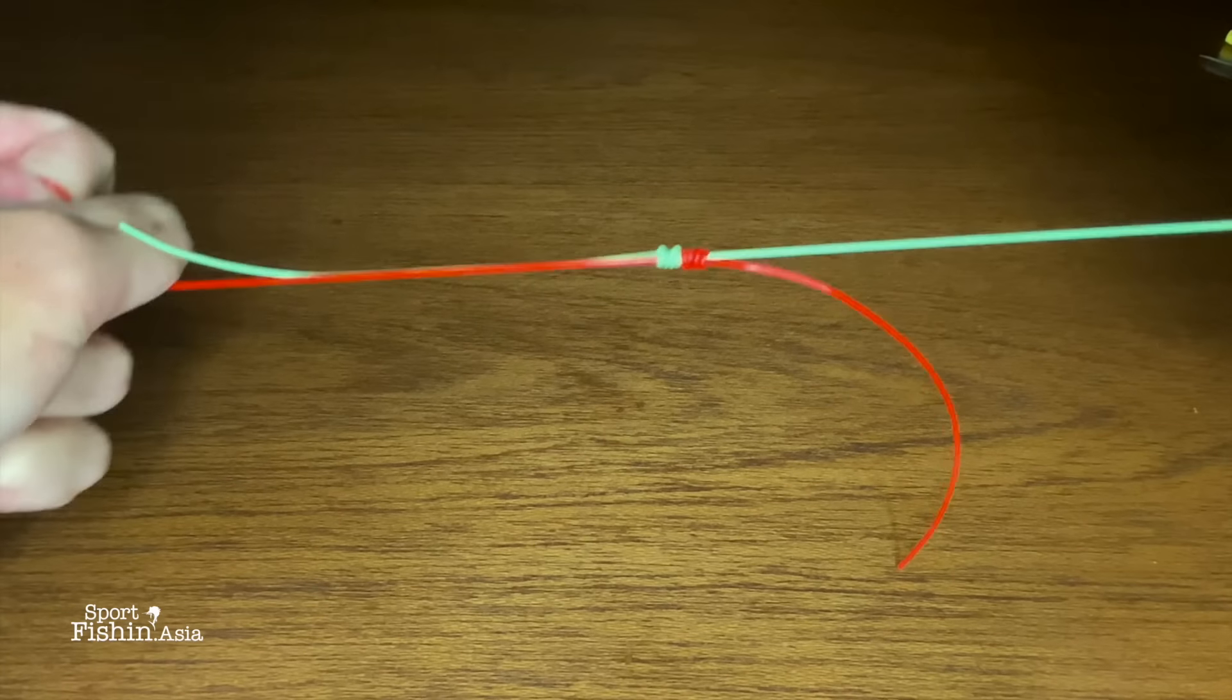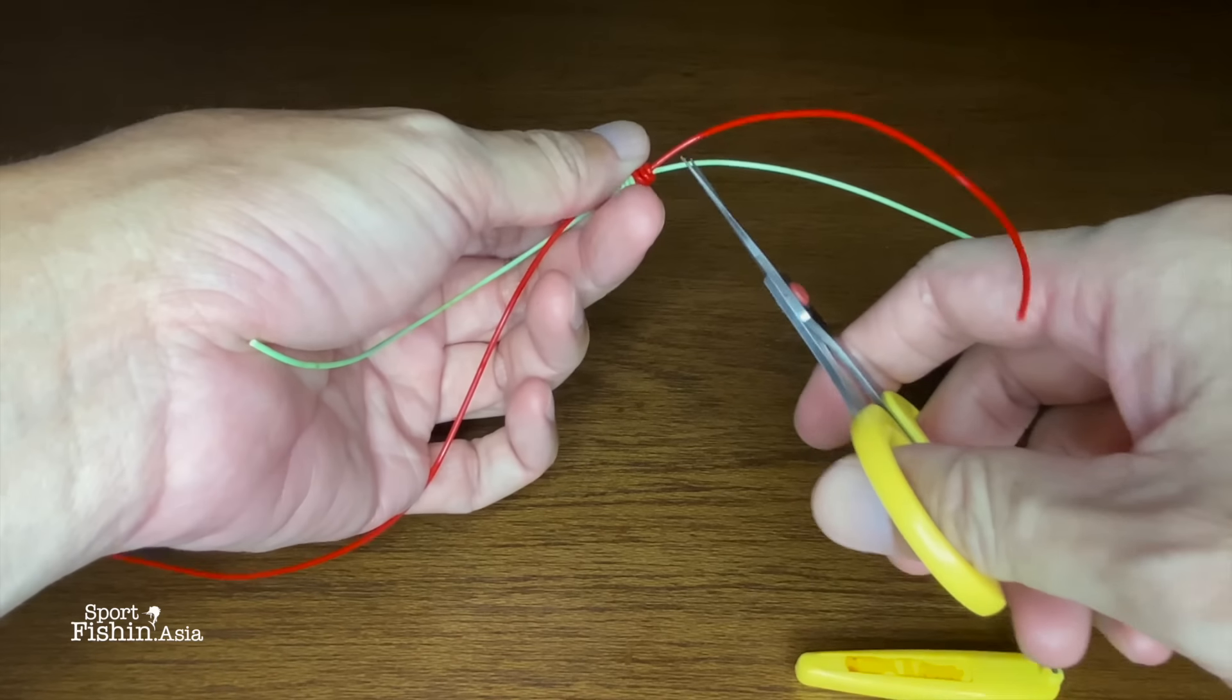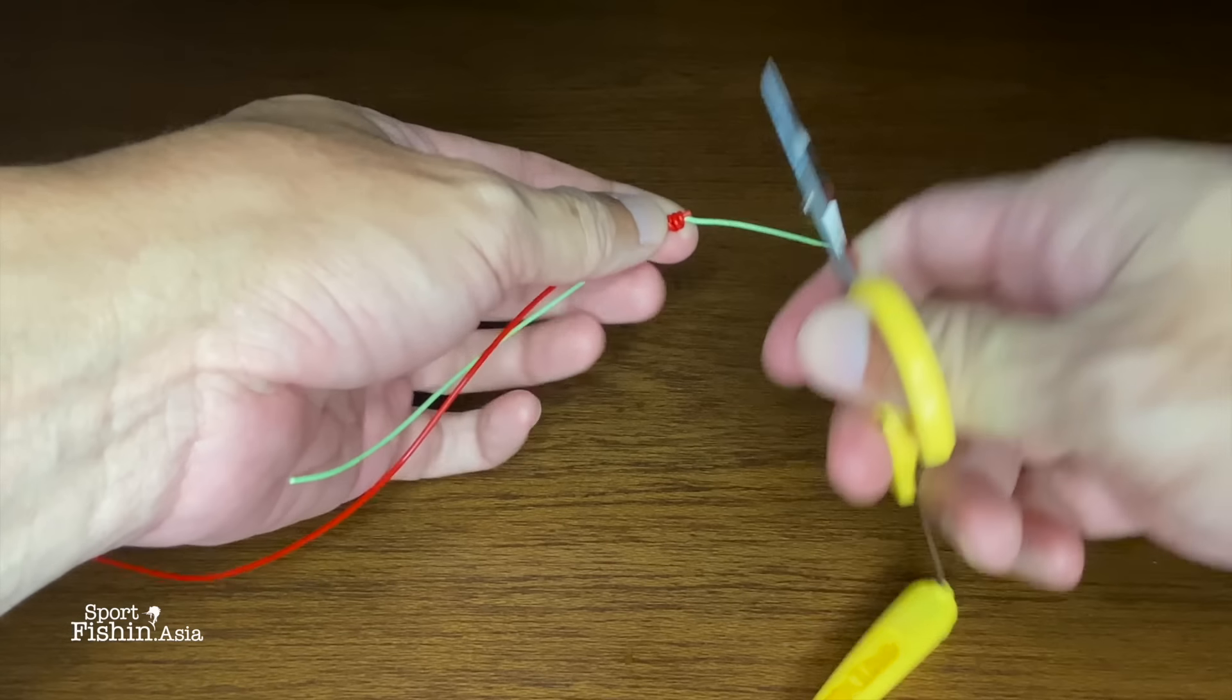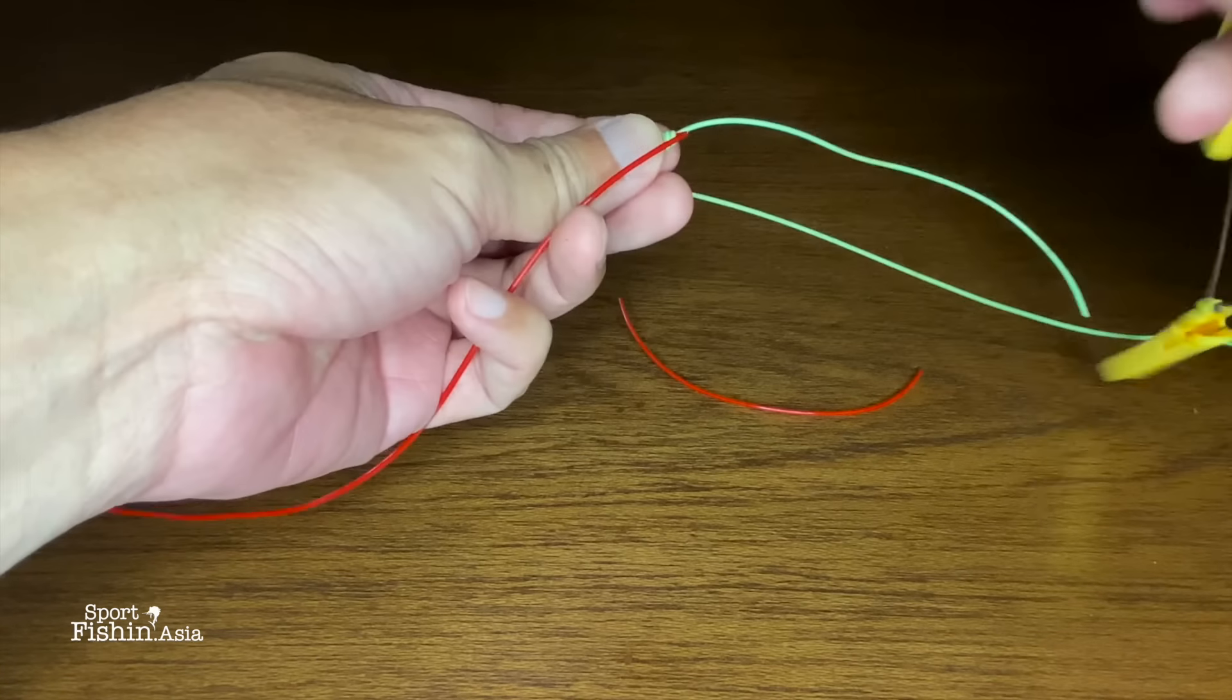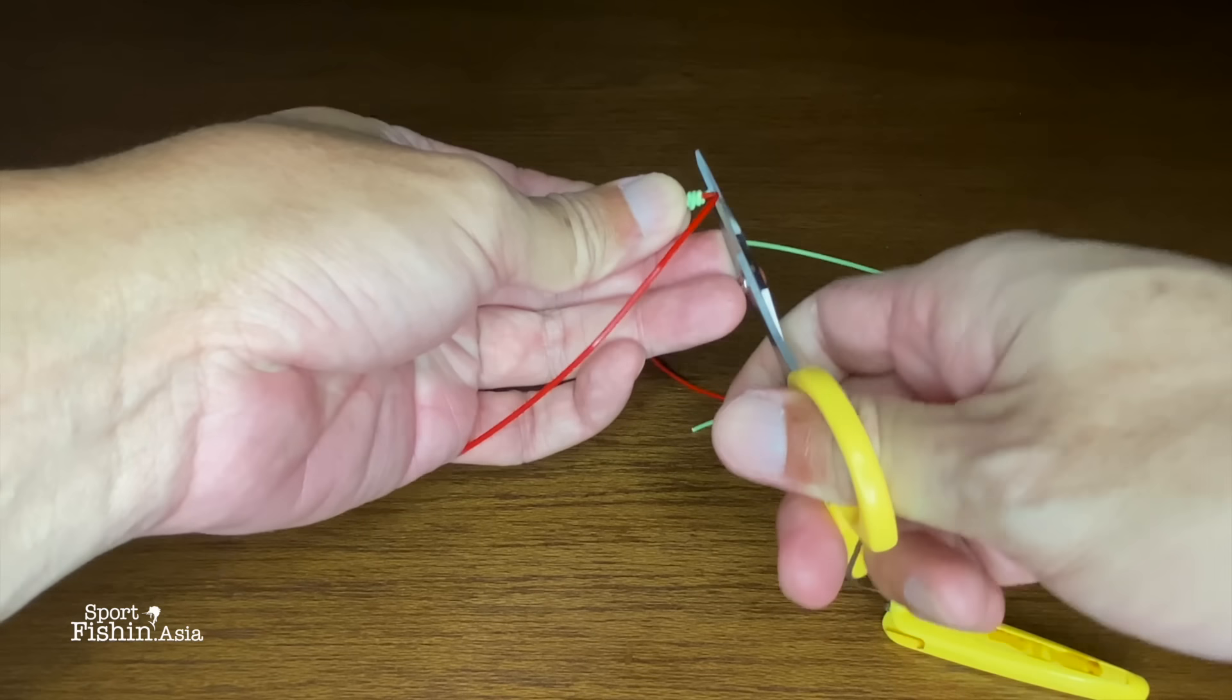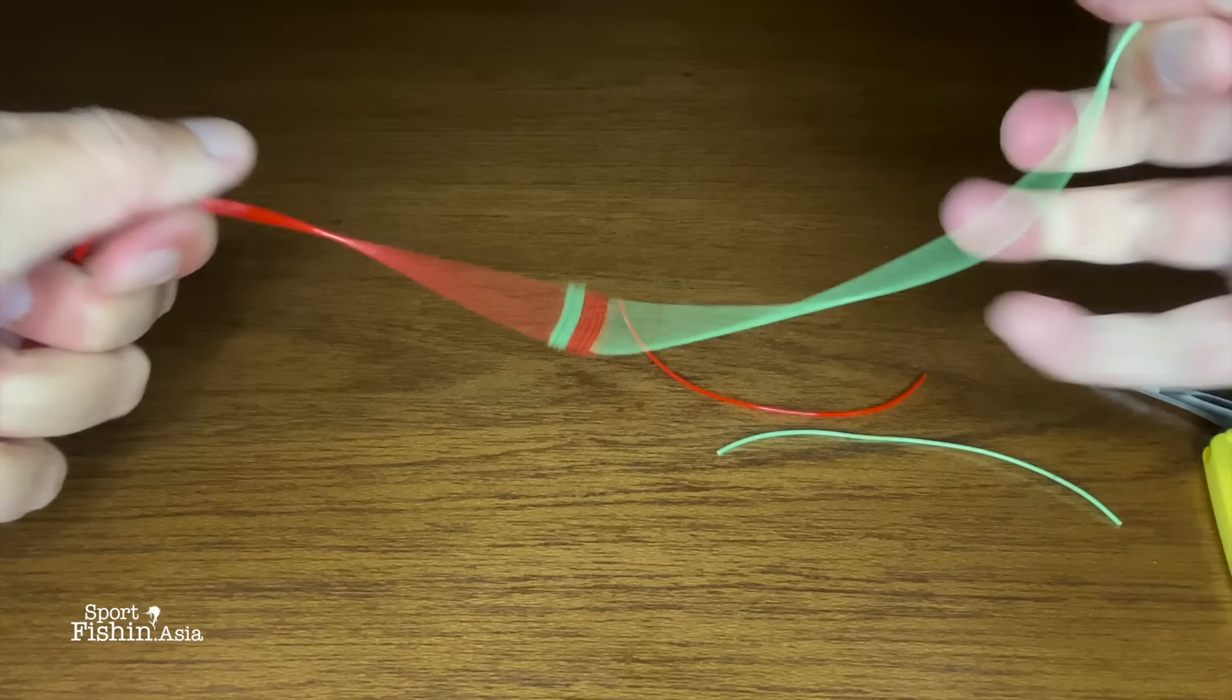Use a plier or hemostat if you need to. Once you've done that, you can cut the tag ends off. This knot is strong—I use it all the time and it's never failed me.